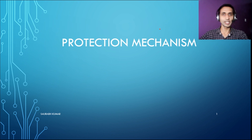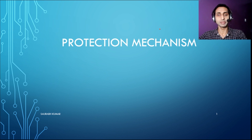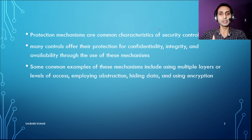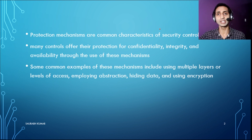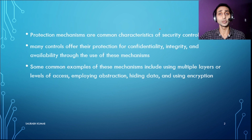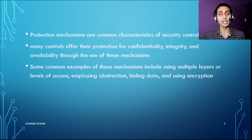Hello everyone, this is Saurabh Kumar and I welcome you all to my video series of CISSP, where today we are going to talk about protection mechanisms. Protection mechanism is one of the most common characteristics for security controls, and all security professionals look for options to protect documents, data, and resources. Many controls offer different kinds of protection to fulfill the CIA requirement: confidentiality, integrity, and availability. In this video I will be talking about some terms from chapter one of the CISSP program.